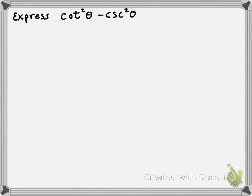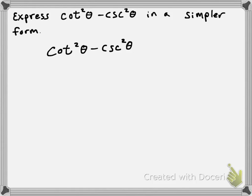Let's suppose I want to express cotangent squared of theta minus cosecant squared of theta in some simpler form. I'm going to take this expression and see if I can notice something to work with. Notice that cosecant squared of theta — we have an identity that involves it. Remember that cosecant squared of theta is equal to one plus cotangent squared of theta. That was our third Pythagorean identity.